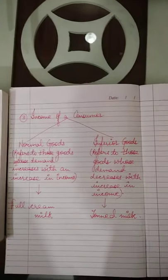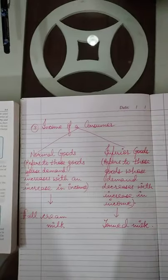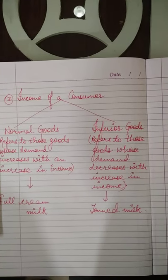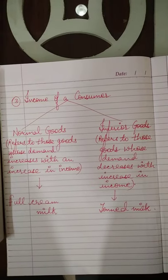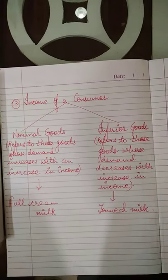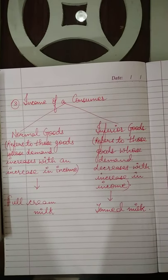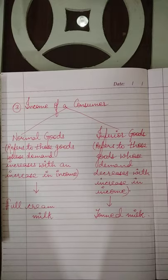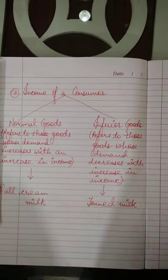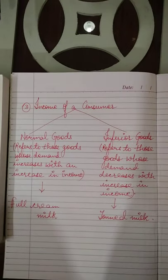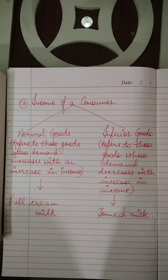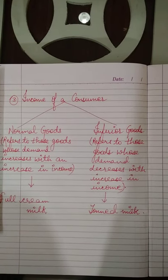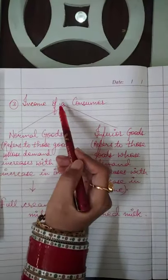Good morning everyone. Today I am going to continue with the topic: factors affecting demand, or determinants of demand. Yesterday we discussed two factors — own price of a commodity and change in the price of related goods, including substitute goods and complementary goods. The third point is income of a consumer.